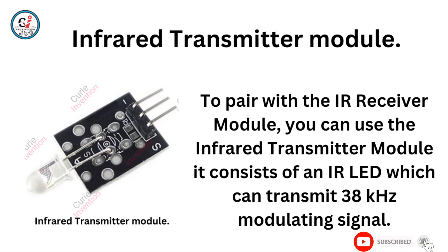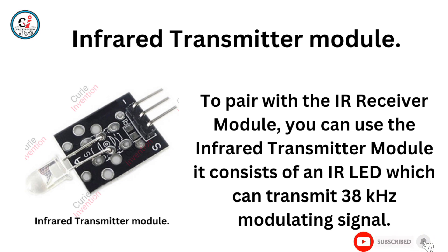Infrared Transmitter Module. To pair with the IR Receiver Module, you can use the Infrared Transmitter Module. It consists of an IR LED which can transmit a 38 kHz modulating signal.